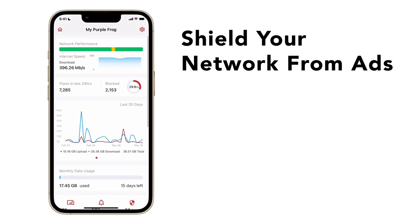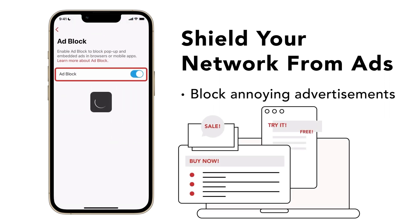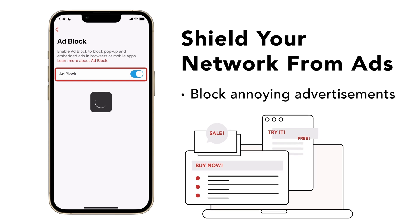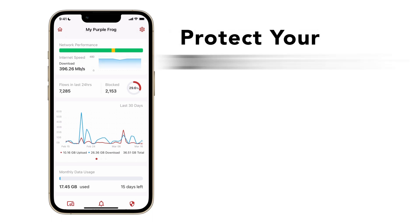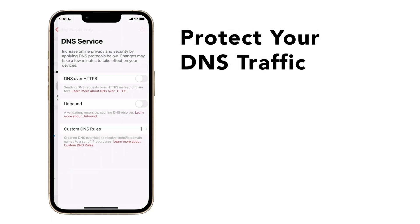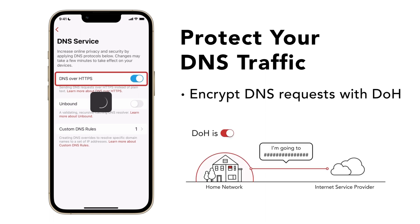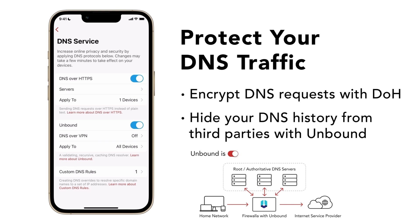You can further tune your network experience by enabling Adblock. Besides preventing annoying advertisements from clogging your screen, Adblock also protects your privacy by preventing ads from tracking your online behavior. Another way to protect your privacy while browsing the web is to turn on DNS over HTTPS, also known as DOH, or turn on Unbound. DOH encrypts your DNS requests, and Unbound prevents a single public server from having all your DNS records. These services help stop third parties from spying on what websites, domains, and services your devices are accessing.